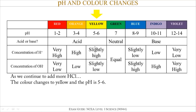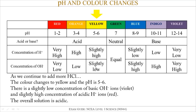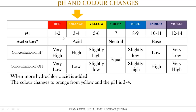Continuing to add more HCl, we reach the yellow stage. Now there is a slightly high concentration of H+ and a slightly lower concentration of OH- ions. Overall the solution is acidic because we're in the acid end of the pH scale.